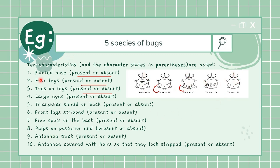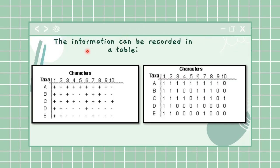This way you can check the character states and see in what species which character is present and which is not. Now the information that we have done in the previous slide can be recorded in a table.